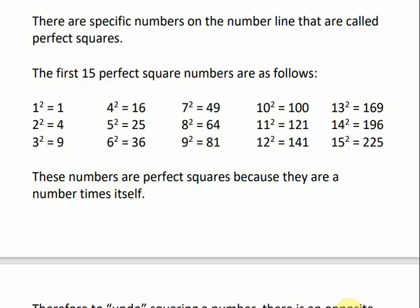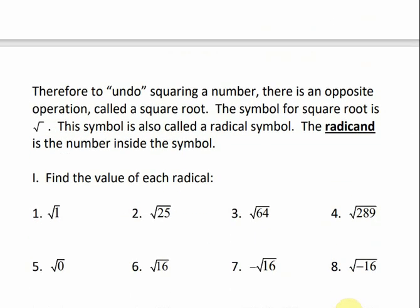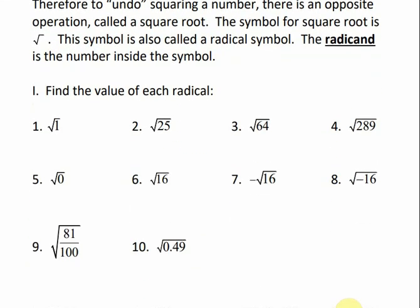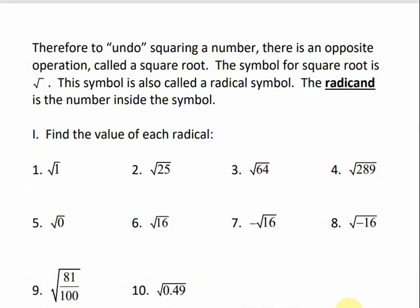We can undo squaring a number, and the way that we can undo it is by taking the square root of the number. The symbol for a square root is this symbol right here — that's called the radical symbol. The number under the radical symbol is called the radicand. So if we were to look at the square root of 1, this symbol is the square root symbol, and the 1 would be our radicand.